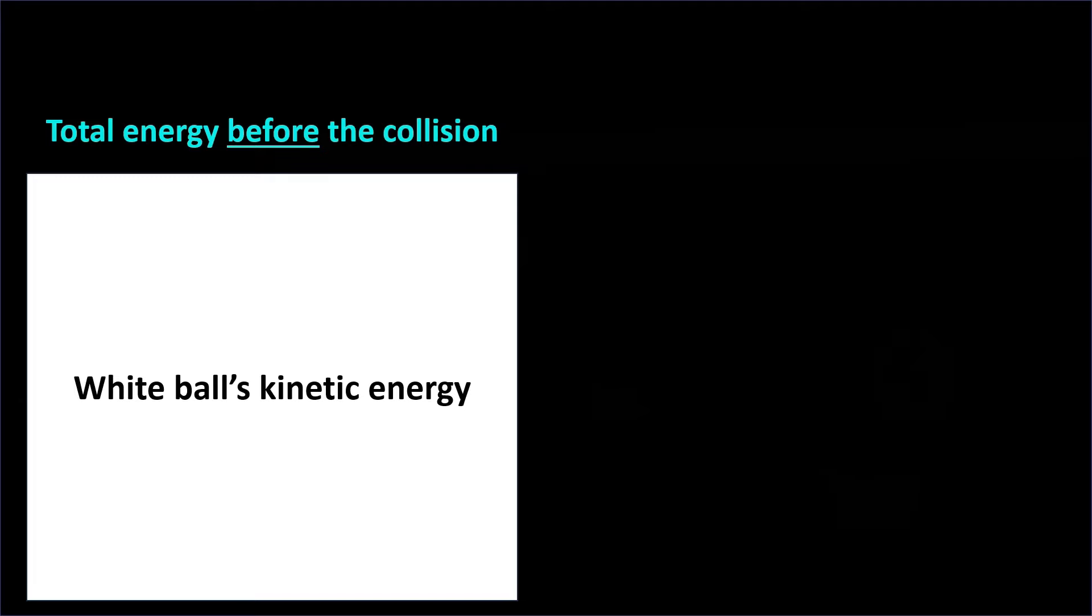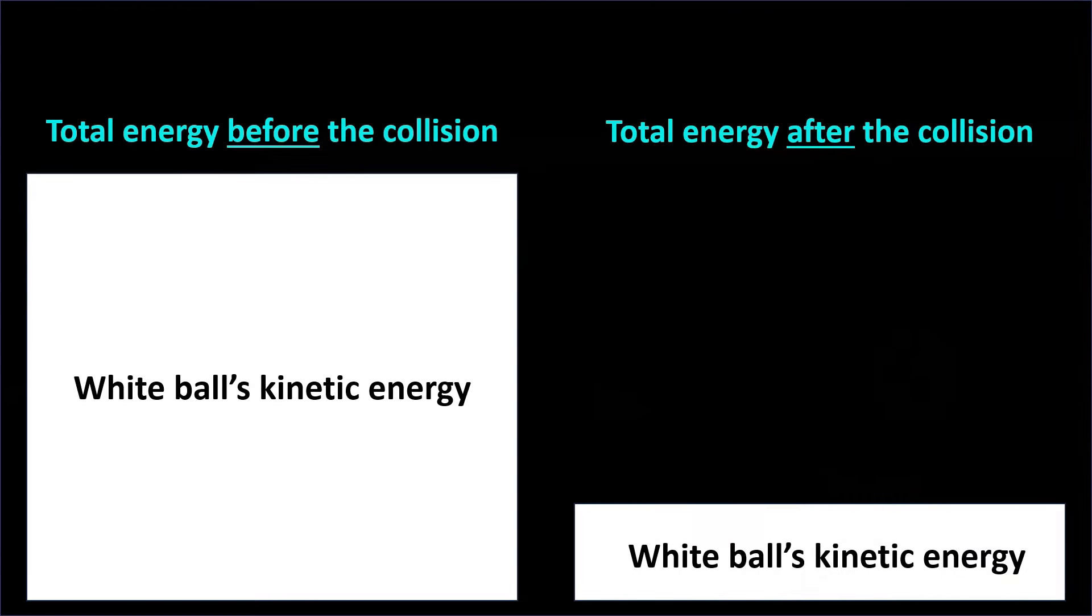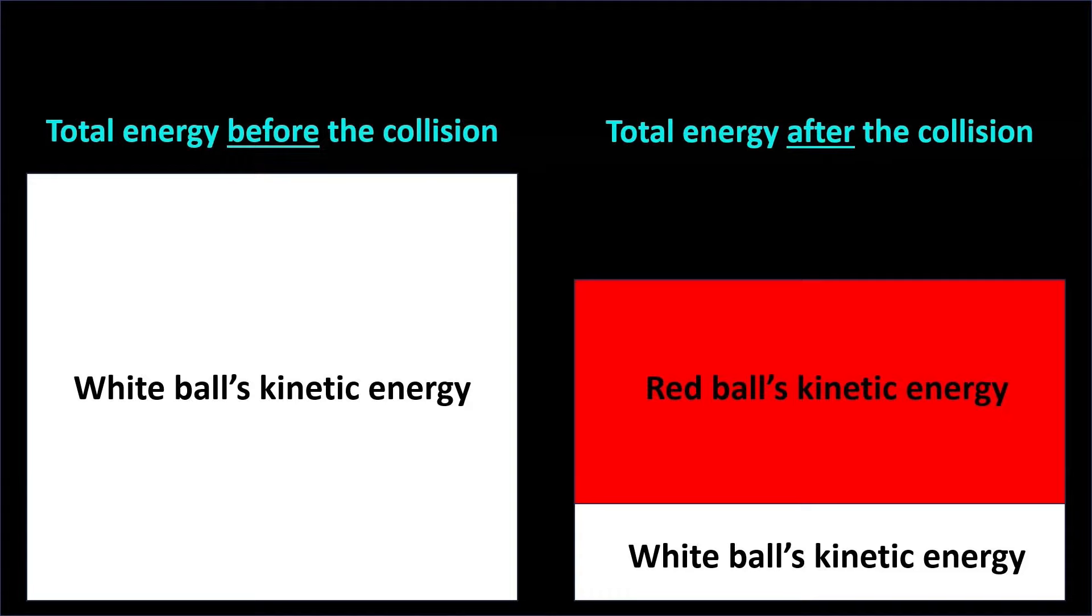Before the collision, all of the energy is in the white ball and is in the form of kinetic energy. After the collision, the white ball has only a little kinetic energy and the ball that it hit has a medium amount of kinetic energy.